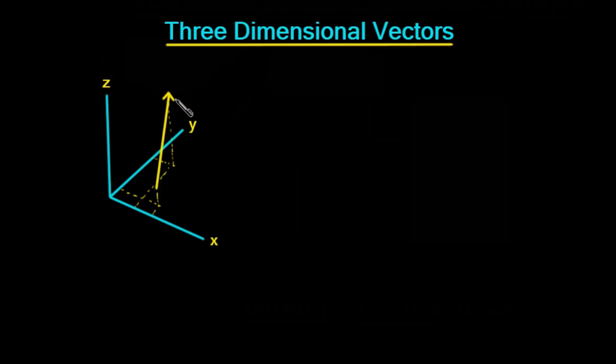So we've got a vector here drawn out in this 3D space. If you come to this point of the vector here, you can see that in order to get to that point, you have to come along a certain distance in the x direction, a certain distance in the y direction, and then up a distance in the z direction.